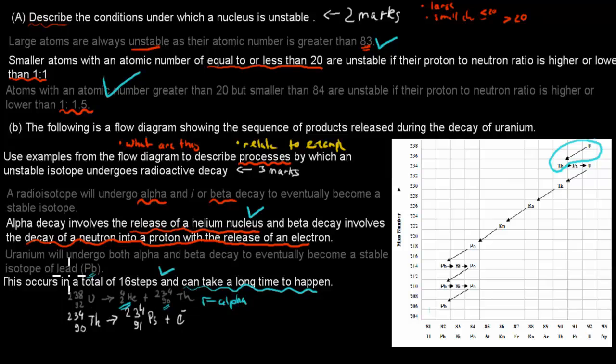And then you should also give an example of beta decay. So beta decay, one that I gave is when TH undergoes beta decay and goes into PA. That was this one here.